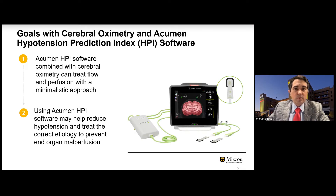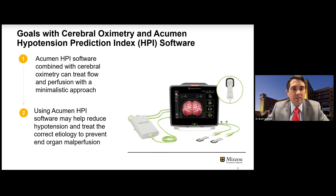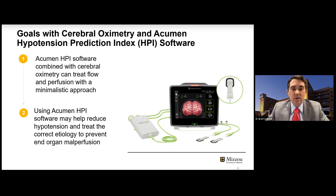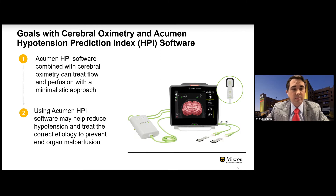What are our goals with Acumen as well as NIRS cerebral oximetry? One thing is we want to use the Acumen HPI — or hypotensive prediction software — combined with that cerebral oximetry to treat flow and perfusion. Our ultimate goal that we've learned from med school, our residencies, and our practices is not just to worry about pressure. Our ultimate goal is to get oxygen to the mitochondria and treat that flow and perfusion.